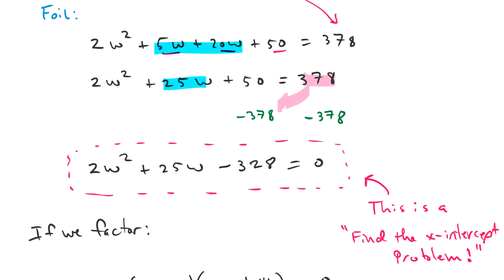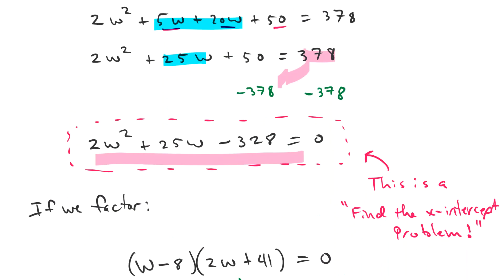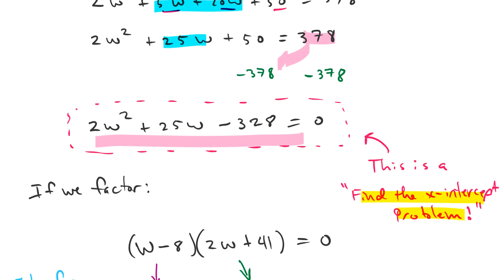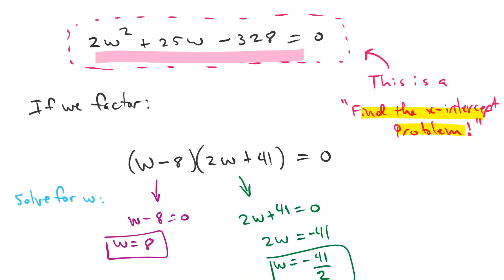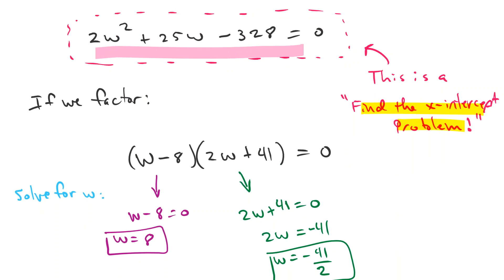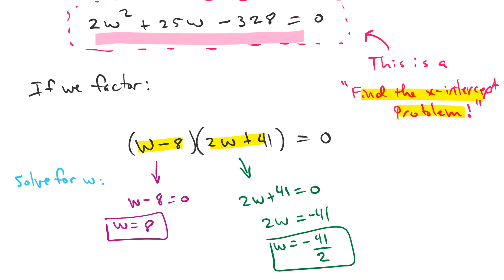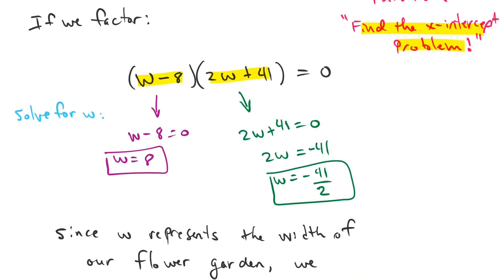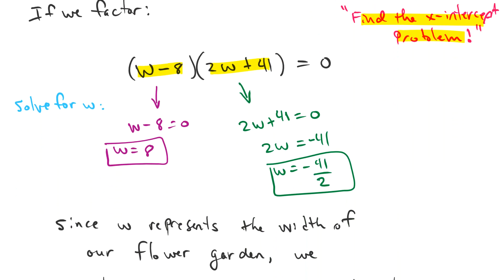Then we get this problem, which by the way is just a finding x-intercept problem. So here you can plug the a, b, and c here into the quadratic formula. You could factor it, you could graph it. If we factored it, this is what we would get here. We can solve both. We can set both those equal to zero and solve, which gives us W equals 8 and W equals negative 41 over 2.